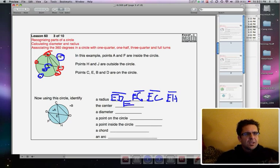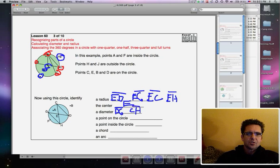A diameter, there's two diameters you could name: DG or GD with a segment across the top, or you could have named CH or HC with the segment symbol across the top. A point on the circle, you could write just D, you could write just H, P, G, or C. All of those are on the circle. For inside the circle, you could have named A or you could have named E. Again, you only need one of each of these.